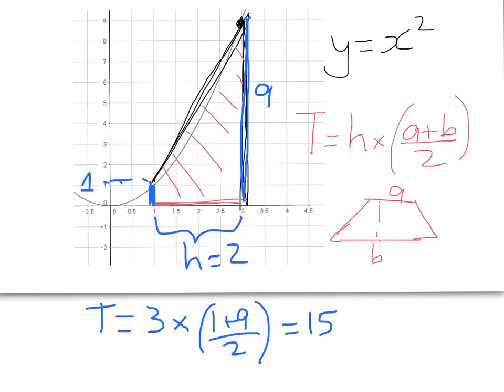But it's pretty obvious that that's a pretty bad approximation. Now, an easy way to make it better would be to divide that area up into two trapezia. So we're going to do that on the next slide.